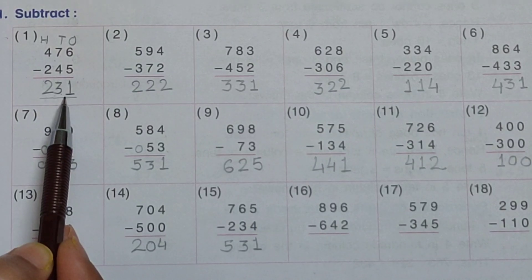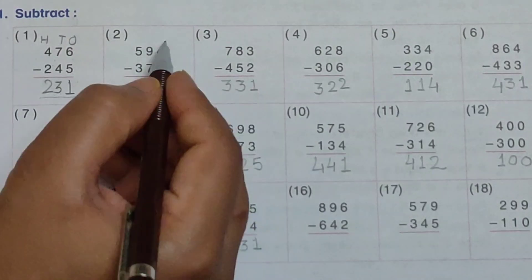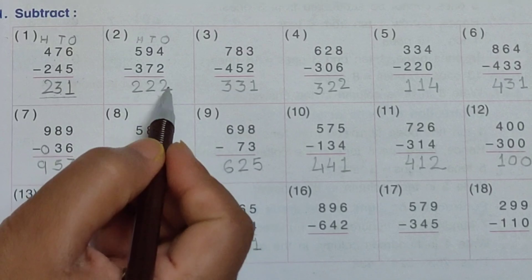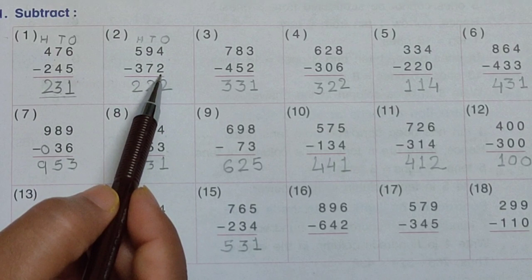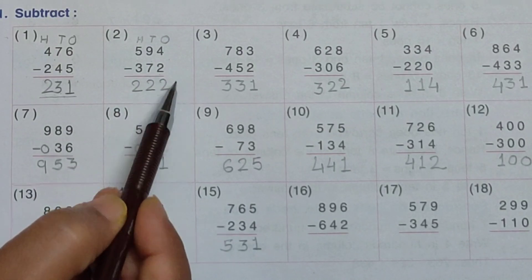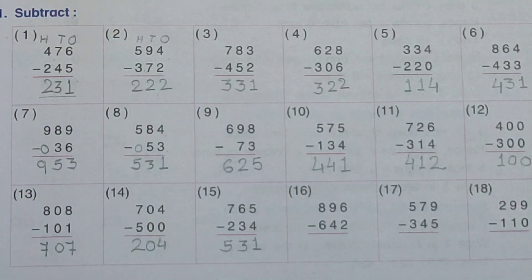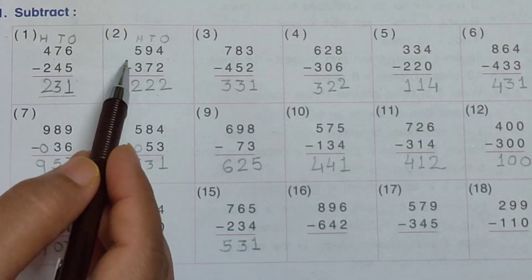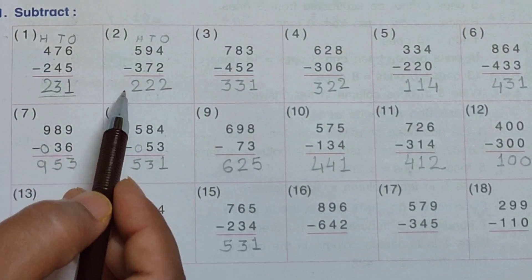Now see the second one: five hundred and ninety-four minus three hundred and seventy-two. Write down ones, tens, hundreds. Ones place: four minus two equals two. Tens place: nine minus seven equals two. Hundreds place: five minus three equals two. Your answer is two hundred and fifty-two.